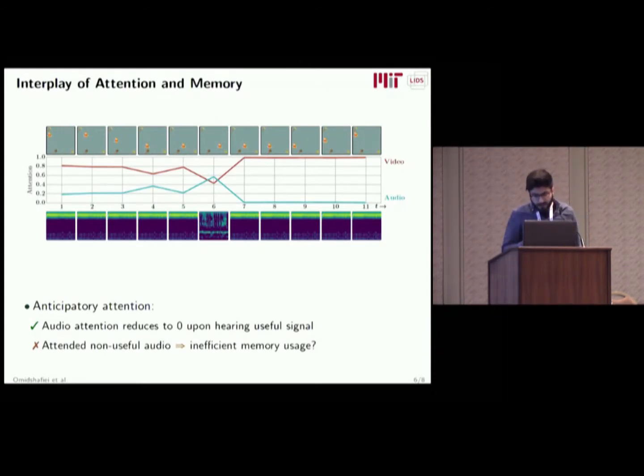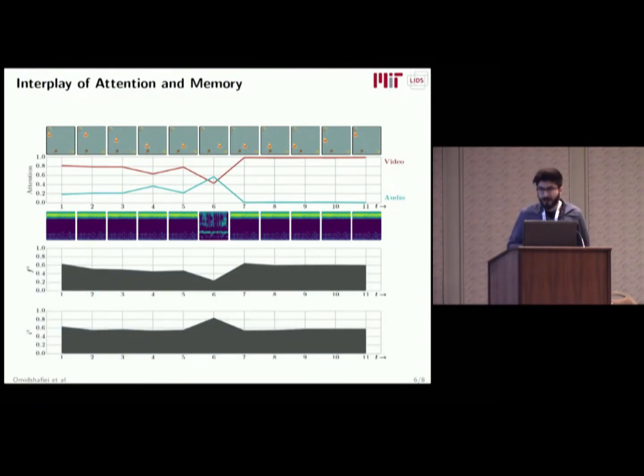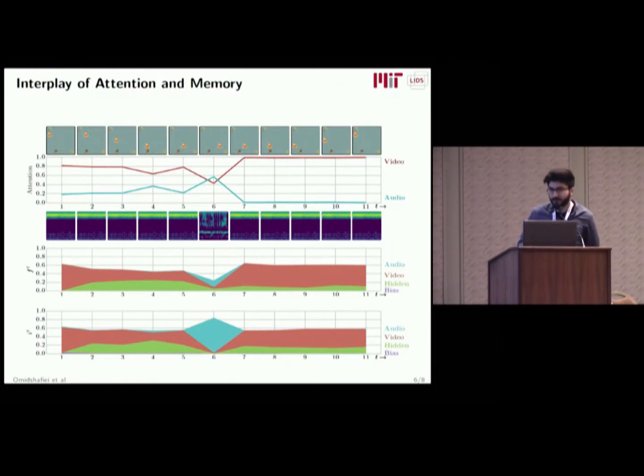To analyze this deeper, we take a look at our LSTM activation functions. On top, we're showing the forget gate activation, and on the bottom, the input gate activation. Recall that when the forget gate is zero, it means more forgetting. When the input gate is one, it means more input going through. Critically, we see something interesting, which is that at time step 6, we have this rewriting event. So maybe the agent is not actually writing any of the audio until that point. We wanted to dig deeper. It turns out with concatenated attention, we can actually decompose the contribution of audio, video, hidden state, and bias to both of these activations.